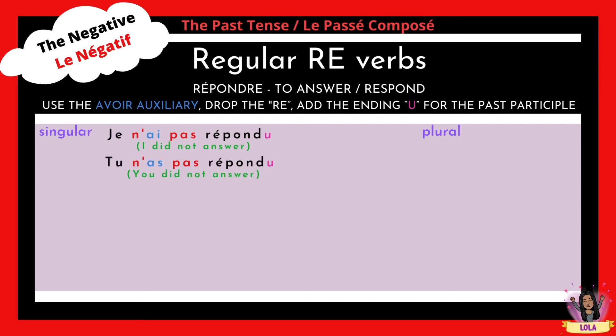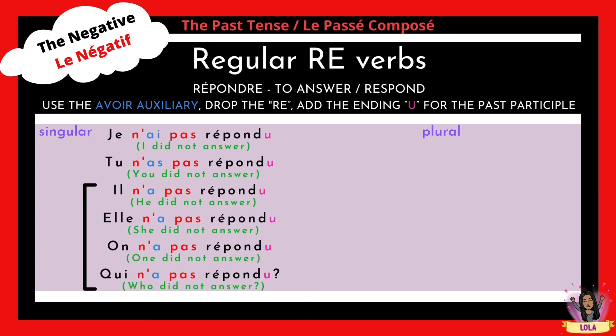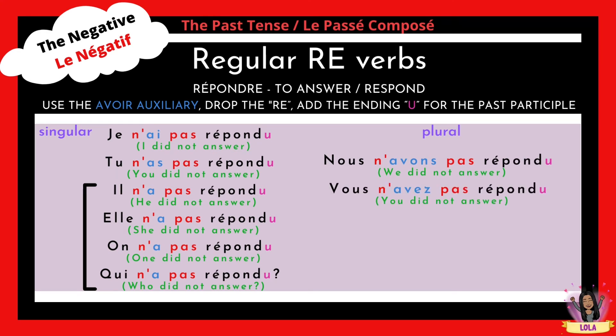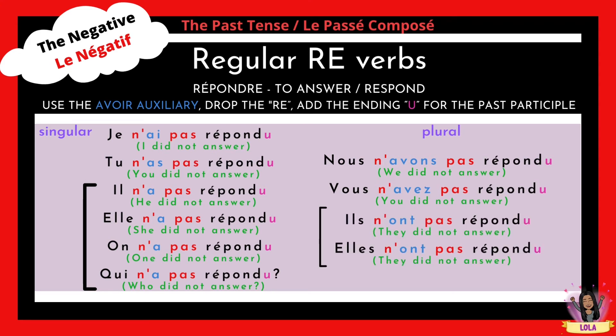Tu n'as pas répondu: you did not answer. Il n'a pas répondu: he did not answer. Elle n'a pas répondu: she did not answer. On n'a pas répondu: one did not answer. Qui n'a pas répondu: who did not answer. Nous n'avons pas répondu: we did not answer. Vous n'aviez pas répondu: you did not answer. Ils n'ont pas répondu: they did not answer. Elles n'ont pas répondu: they did not answer.